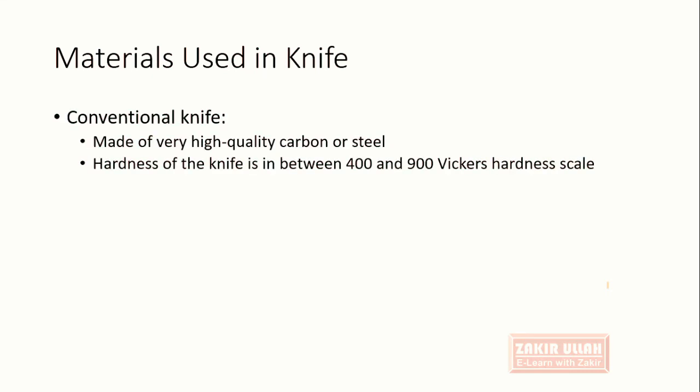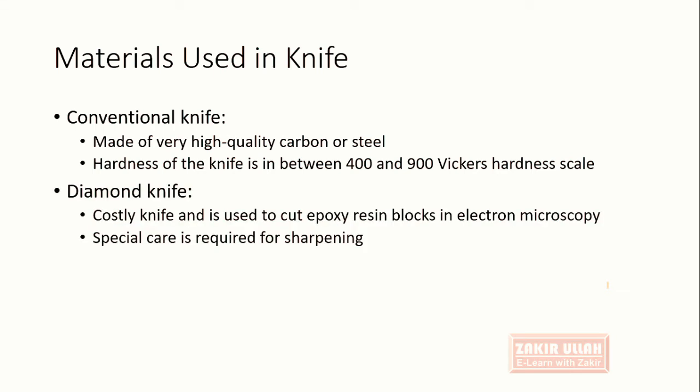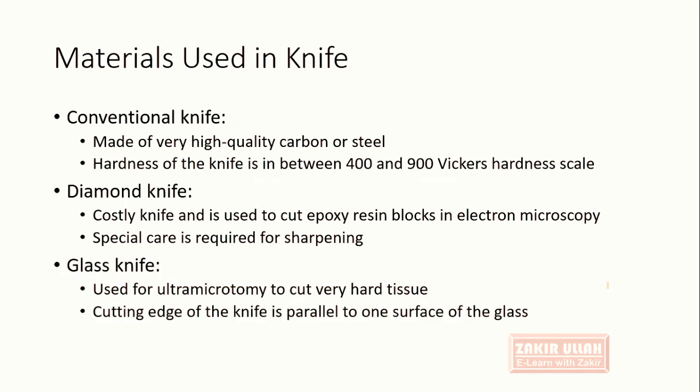Regarding knife materials: conventional knives are made from very high quality carbon steel with a hardness of 90 to 100 on the Vickers hardness scale. Diamond knives are very costly and used to cut epoxy resin blocks for electron microscopy, requiring special care during sharpening. Glass knives are used in the ultra microtome to cut very hard or very thin tissue, with the cutting edge parallel to one surface of the glass.